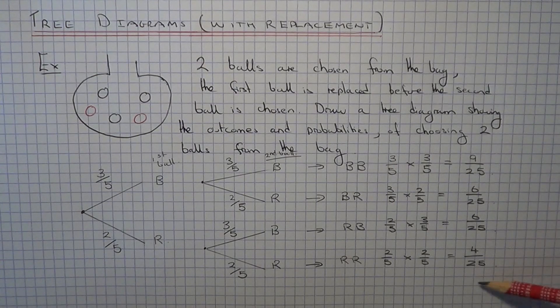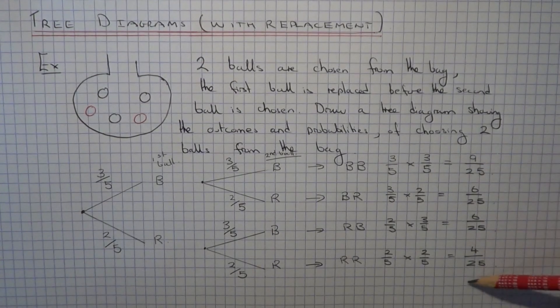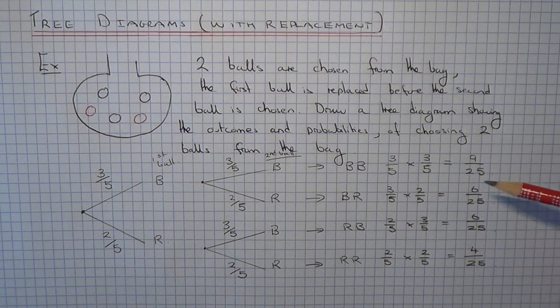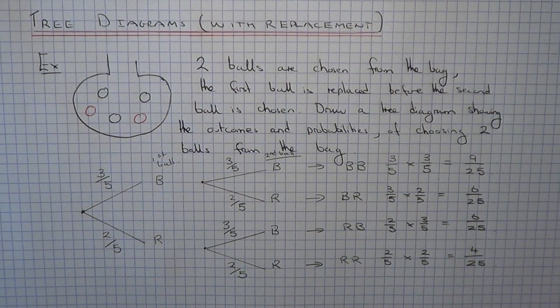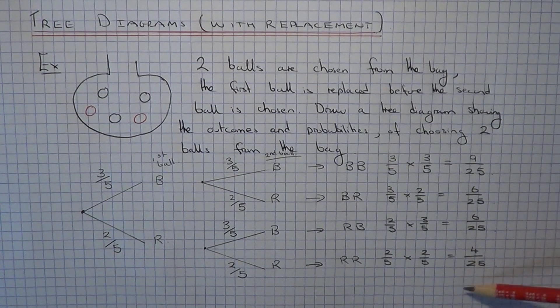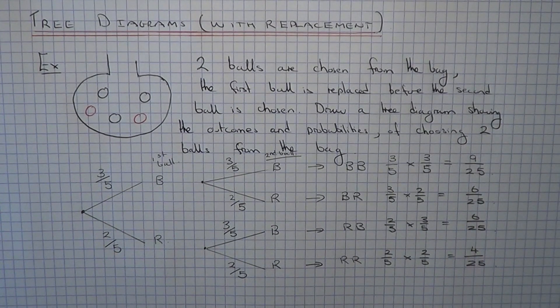So these are all our outcomes that we have here with the probabilities. You can check that this is correct because all these should add up to a whole one. If you add these up, it gives you 25 out of 25.